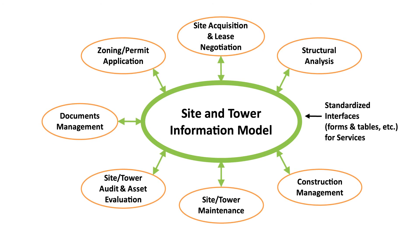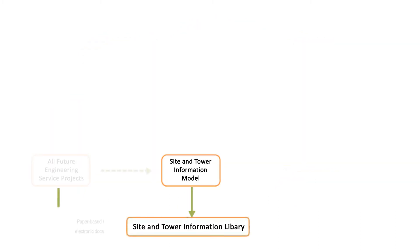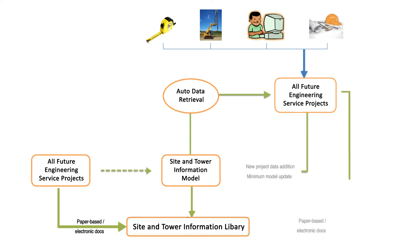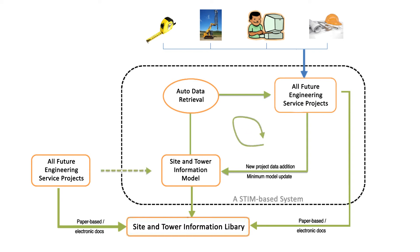Now let's look at the new process. The site and tower information model is initially created using the data from the documents saved at the site and tower information library. With the information model, for an engineering service project, any needed information can be automatically retrieved from the site and tower information model. Any new data will be added as updates to the information model through standardized portal interfaces. All future projects would follow the same standardized procedure of auto data retrieval and site and tower information model updating. The site and tower information model becomes a valuable asset to the site and tower.